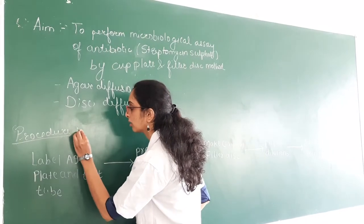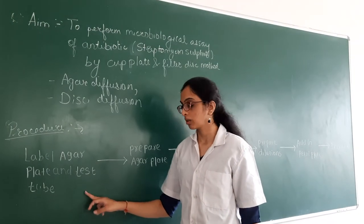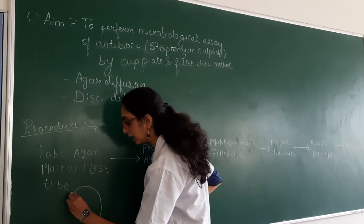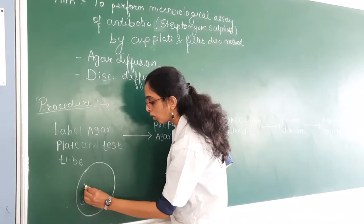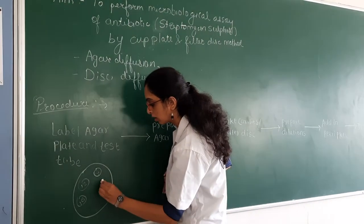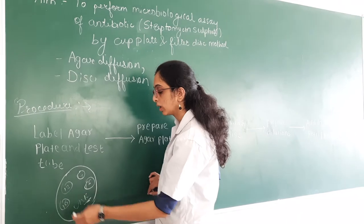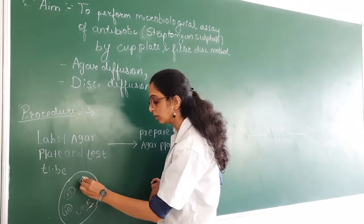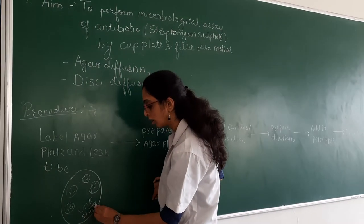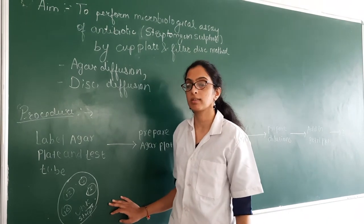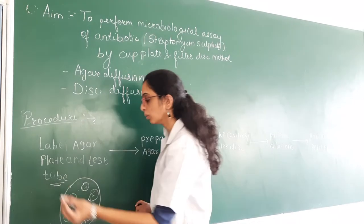The procedure: first, label the agar plate and the test tubes. For the agar plate, label wherever you want to place the disc or make the cavities — for example, labeling dilution concentrations. You can also write the name of the antibiotic in case you are performing the microbiological assay of multiple plates. Similarly, label the test tubes accordingly.